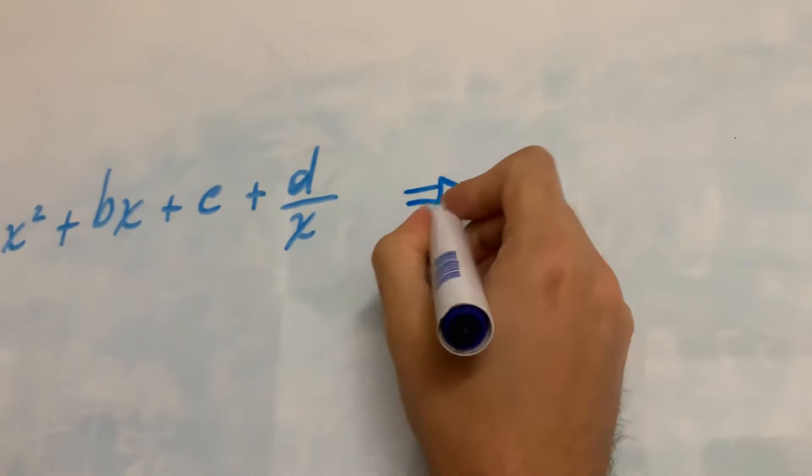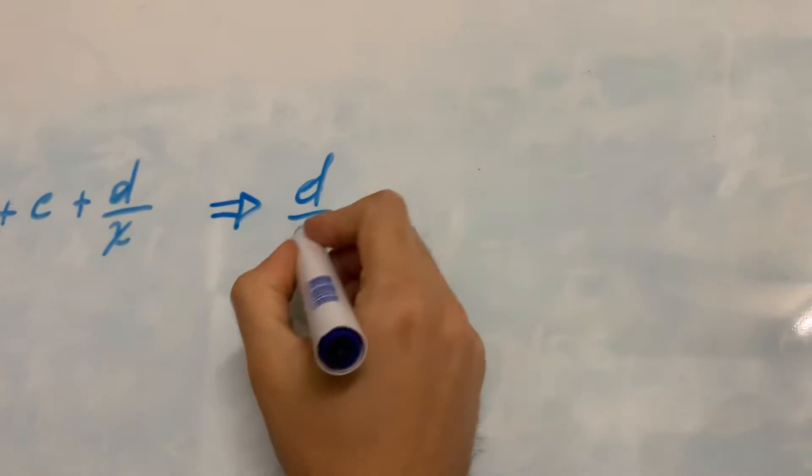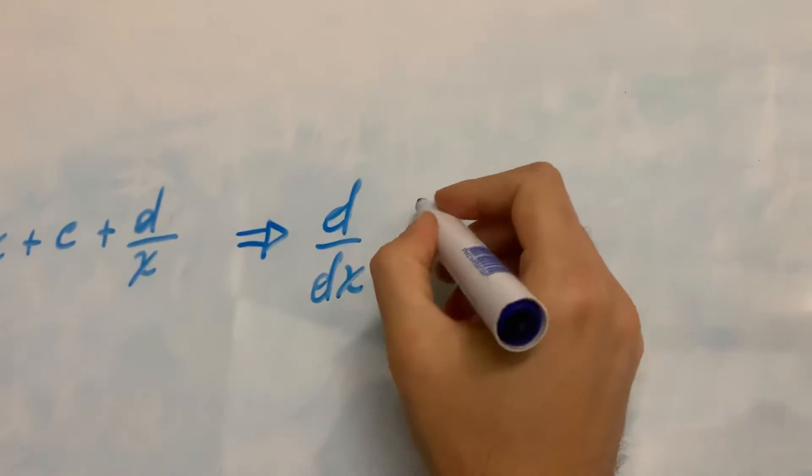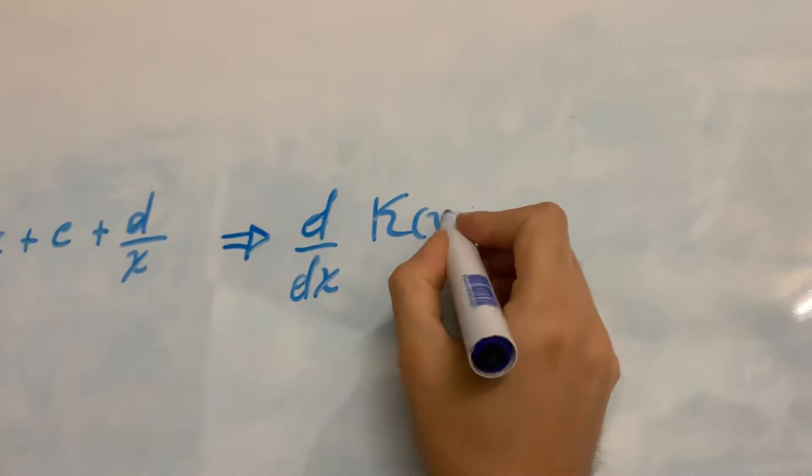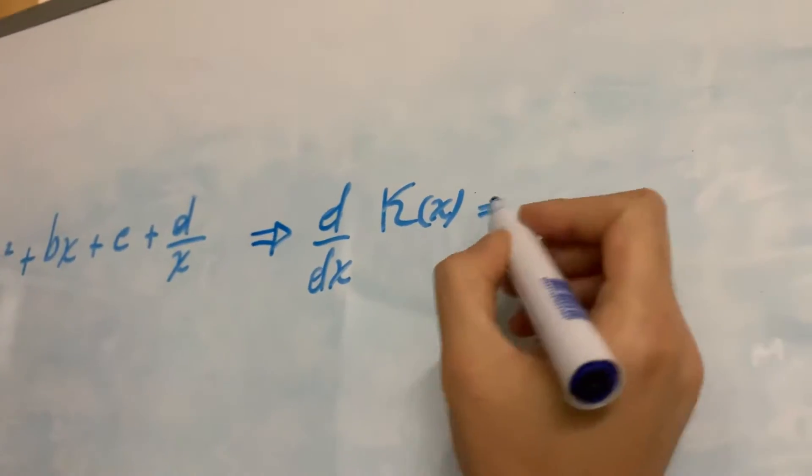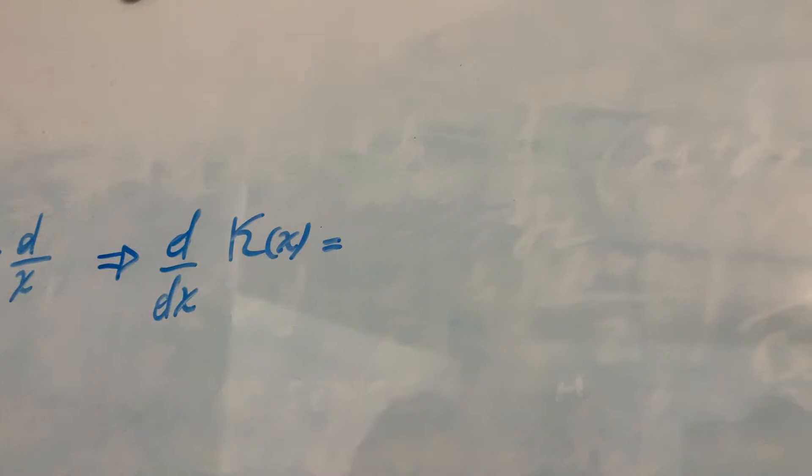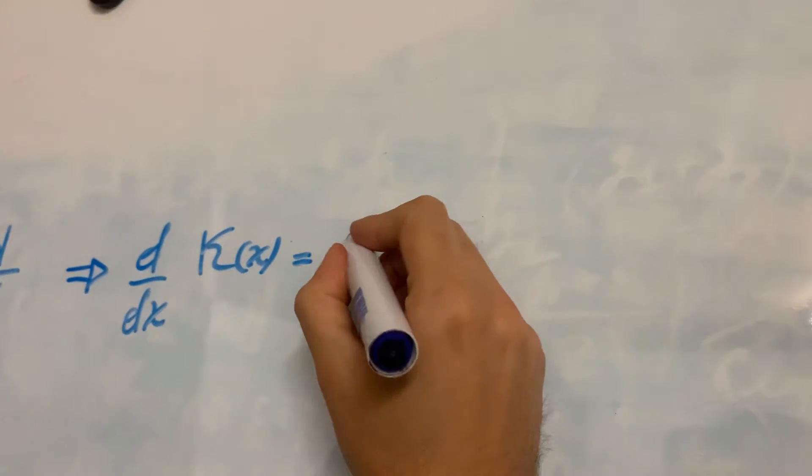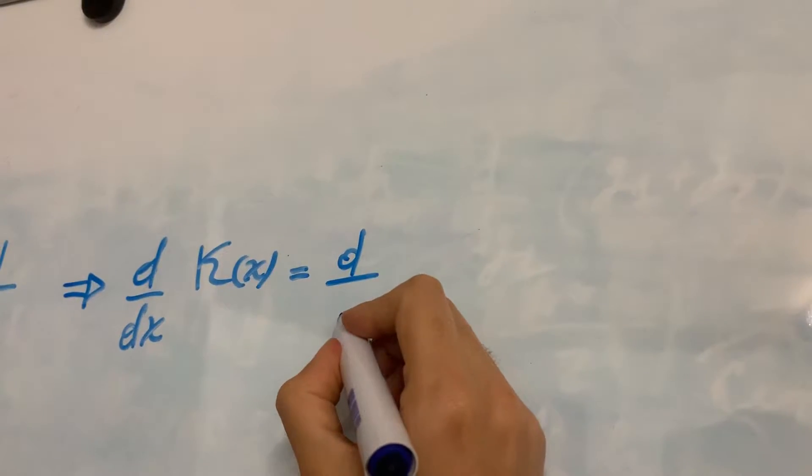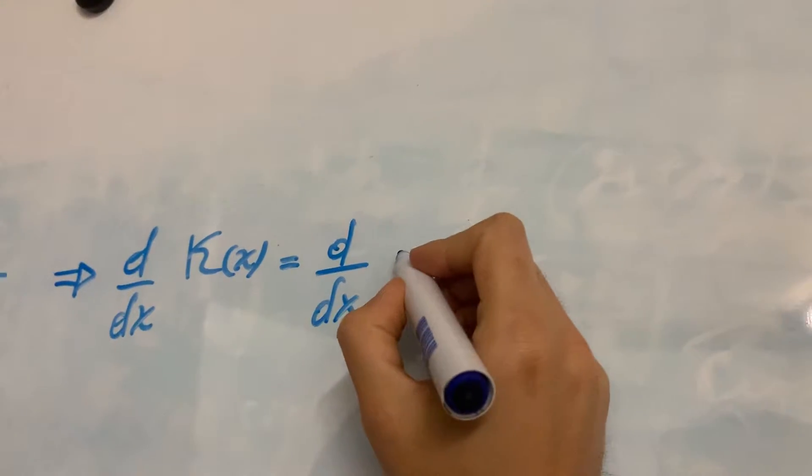So the first rule is that the derivative in the variable x of a function which is a sum, the derivative of the sum is the sum of the derivatives. So we can write it this way.